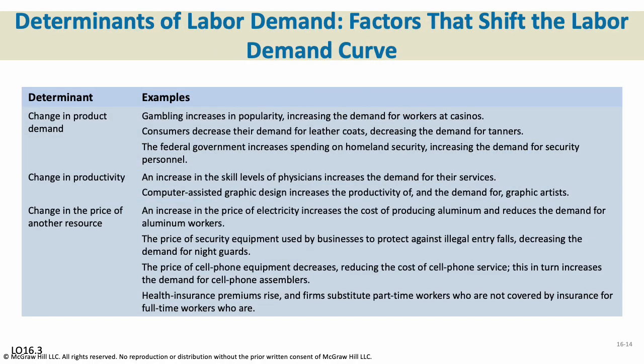Determinants of labor demand and factors that shift it include changes in demand for the product itself: if gambling becomes more popular, there's more demand for casino workers; if consumers don't want leather products, there'll be fewer leather tanners; if the federal government increases spending on homeland security, there will be more security officers. Changes in productivity also matter: an increase in the skill level of doctors increases demand for their services, and computer-assisted graphic design increases the productivity of and demand for graphic artists.